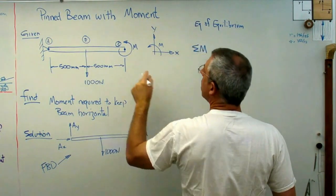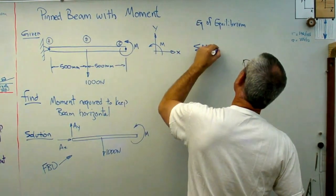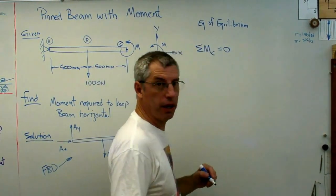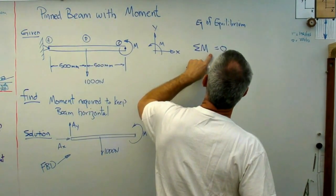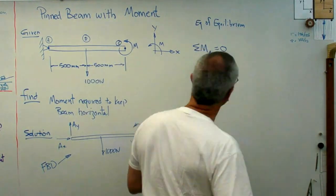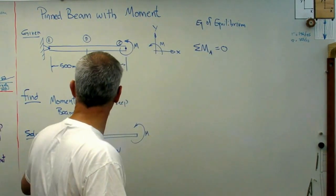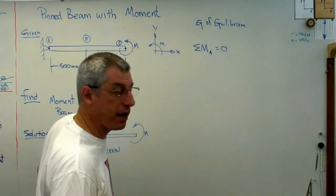We'll set the sum of the moments about, now it's point C, equals zero. Let's look at it here. I'm sorry about C, about A. I talked myself out of it. There's the right answer. So I'm going to sum the moments about A here.